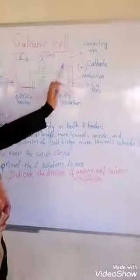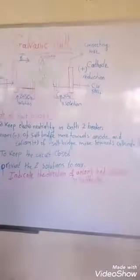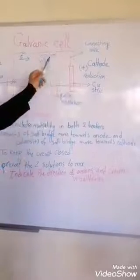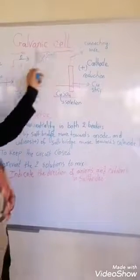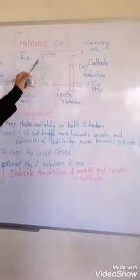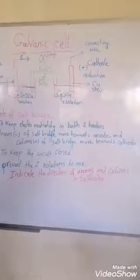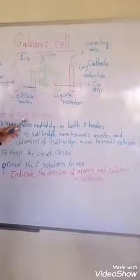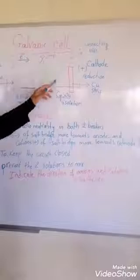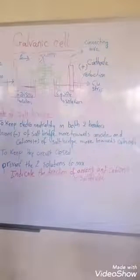At the cathode, reduction always takes place — don't forget: anode = oxidation, cathode = reduction. We also have a connecting wire and a lamp in the circuit.